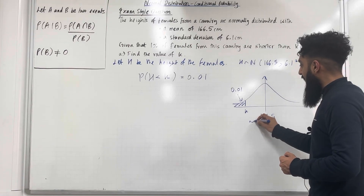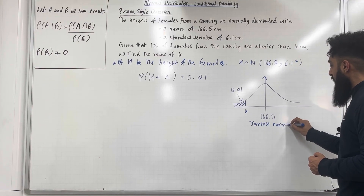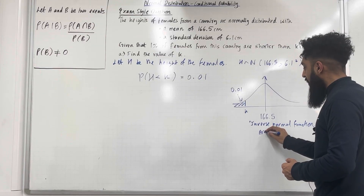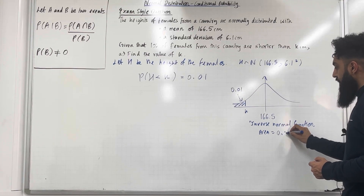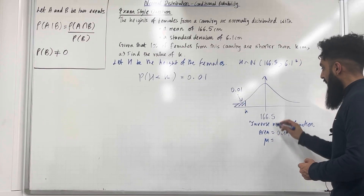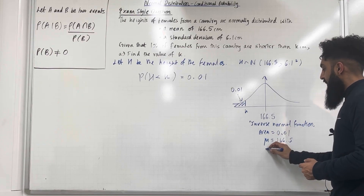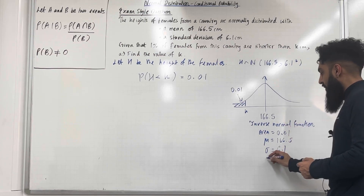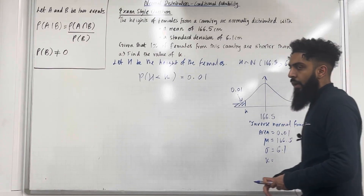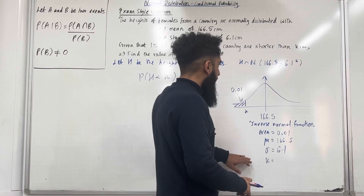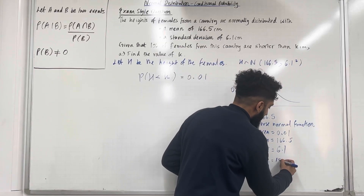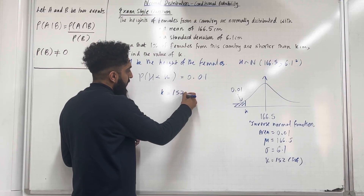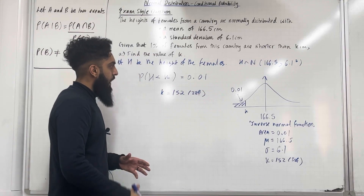To do this, we have to use the inverse normal function in our calculator. The area that we input is 0.01, the mean mu is 166.5, and the standard deviation sigma is 6.1. So we're going to use the inverse normal function to work out the value of K. Using the inverse normal function, I get that K is equal to 152 to 3 significant figures.